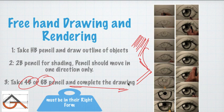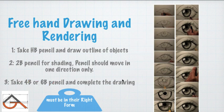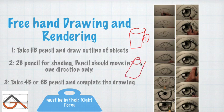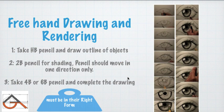If you think the shading is going well, then you can use 4B and 6B pencils to complete the darker areas of the drawing. But the form must first be right — for example, if you need to draw a glass, the glass form has to be correct before you proceed to deep shading.